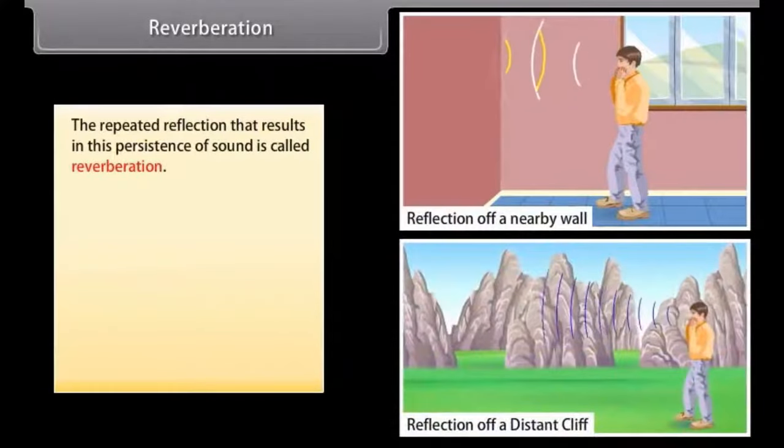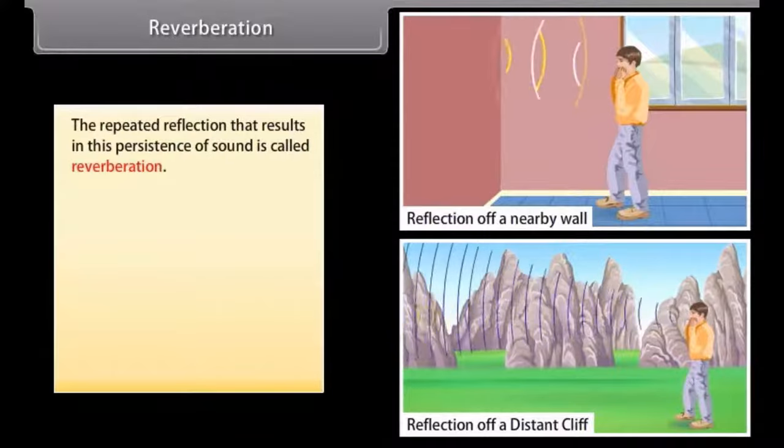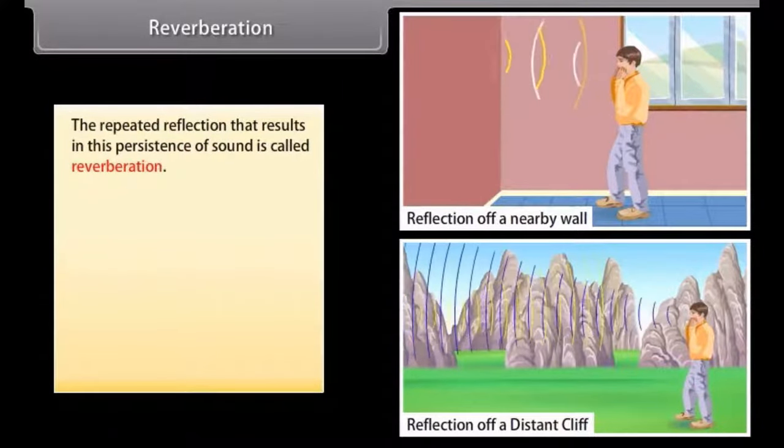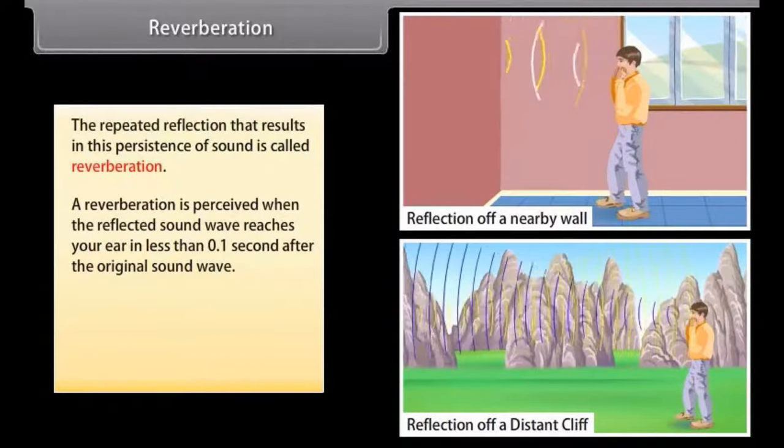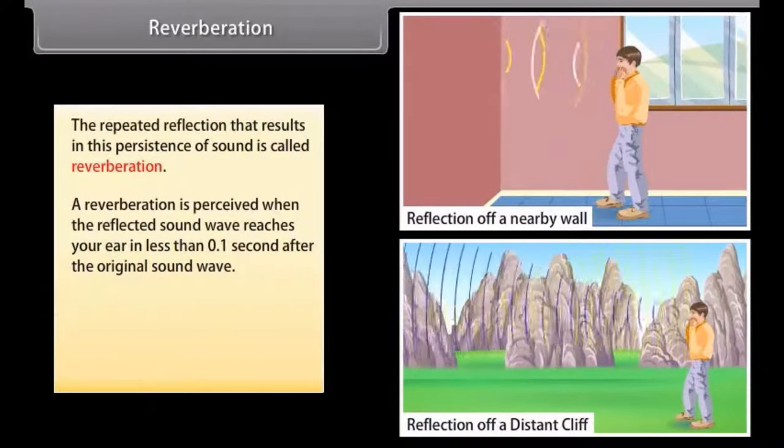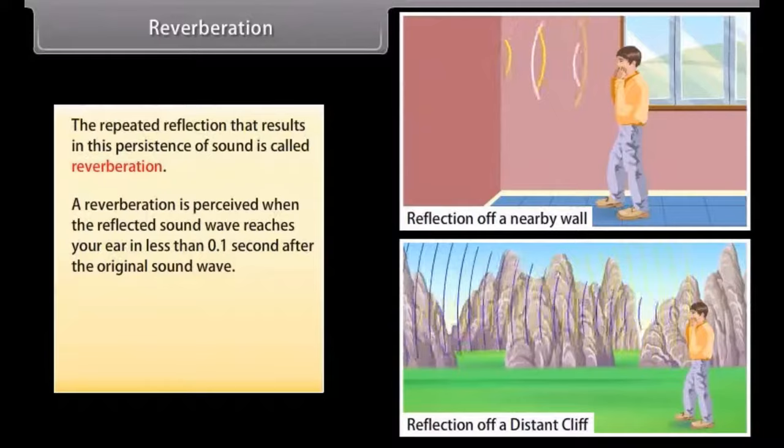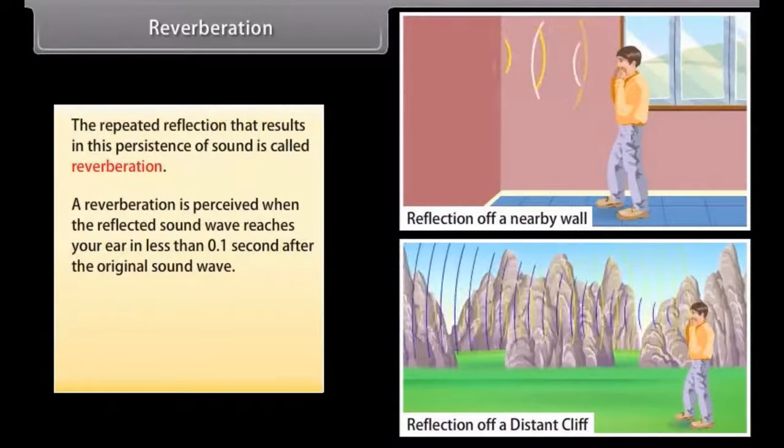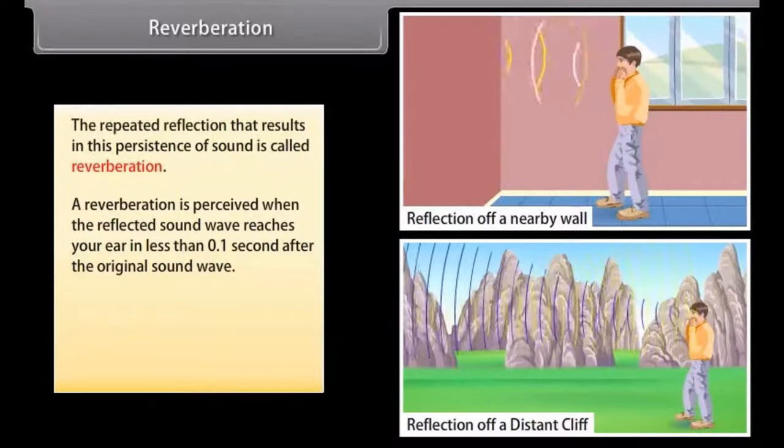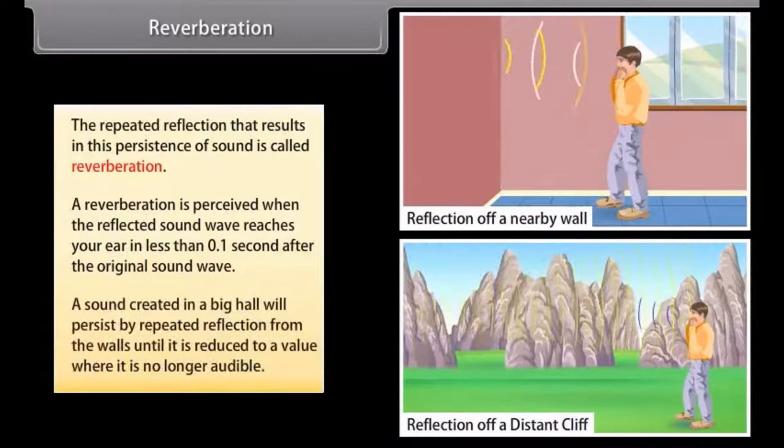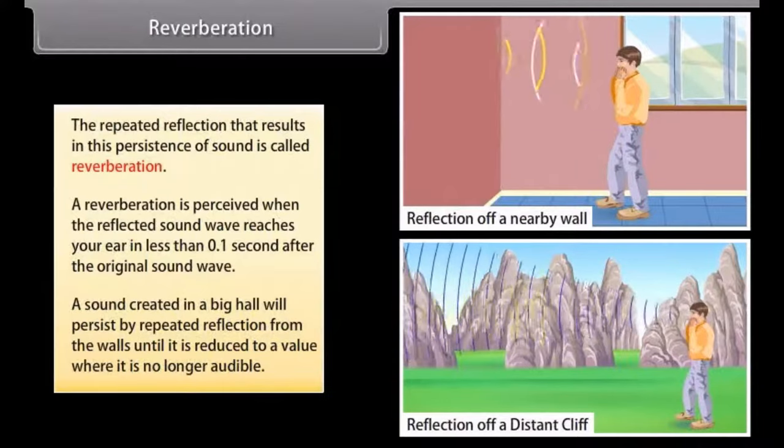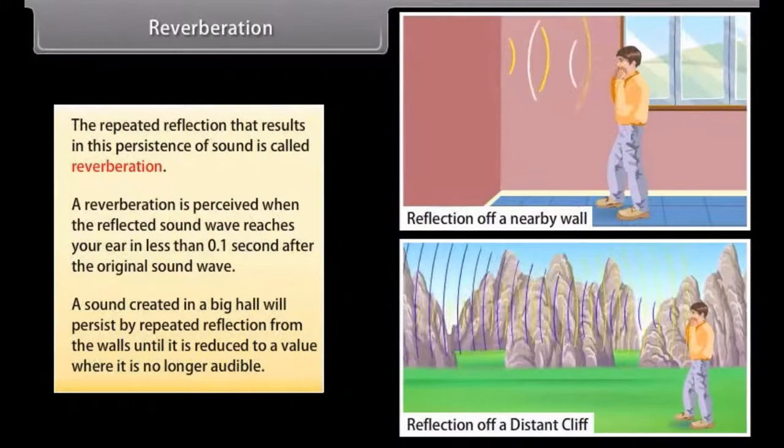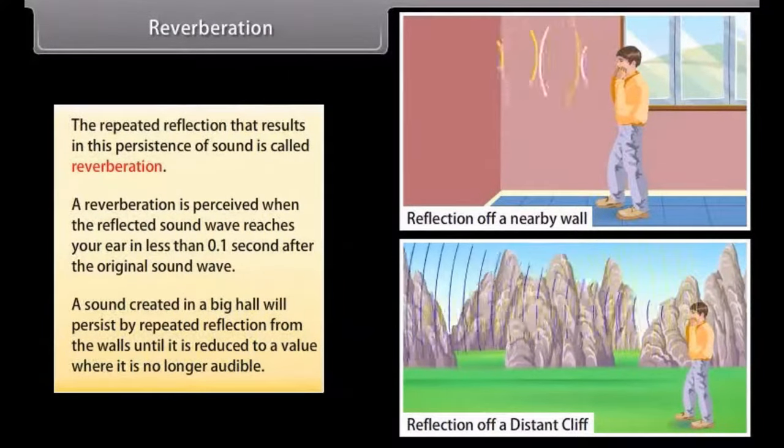Reverberation. The repeated reflection that results in this persistence of sound is called reverberation. A reverberation is perceived when the reflected sound wave reaches your ear in less than 0.1 second after the original sound wave. For example a sound created in a big hall will persist by repeated reflection from the walls until it is reduced to a value where it is no longer audible.